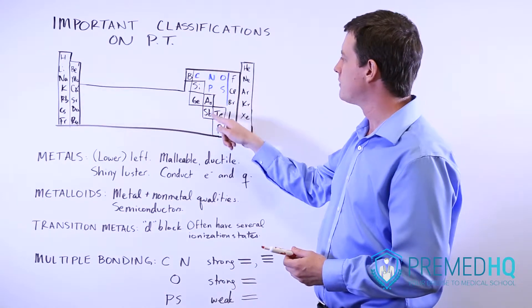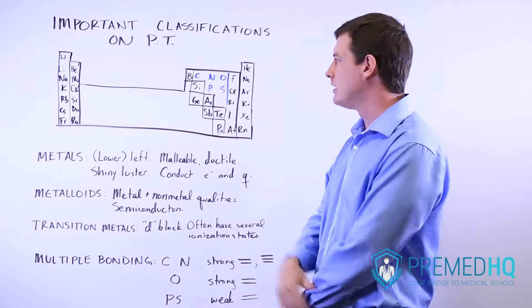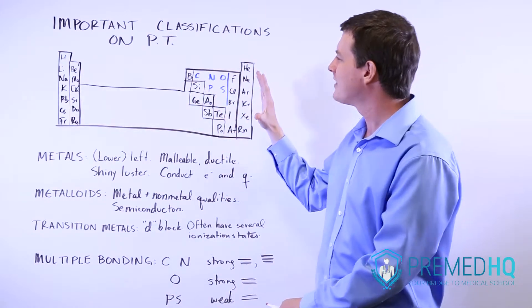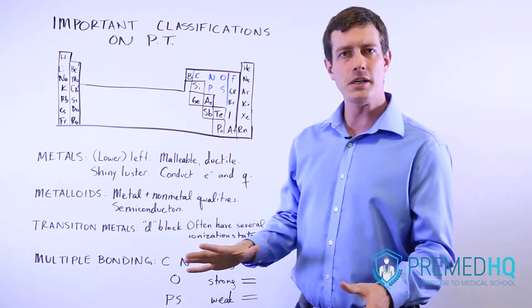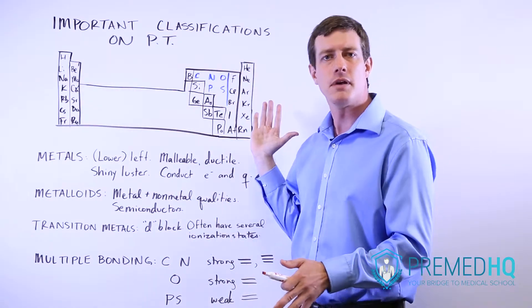Recognize this sort of staircase that is drawn that represents all the metalloids, and then anything to the left of that other than hydrogen will be a metal, and anything to the right will be a nonmetal.